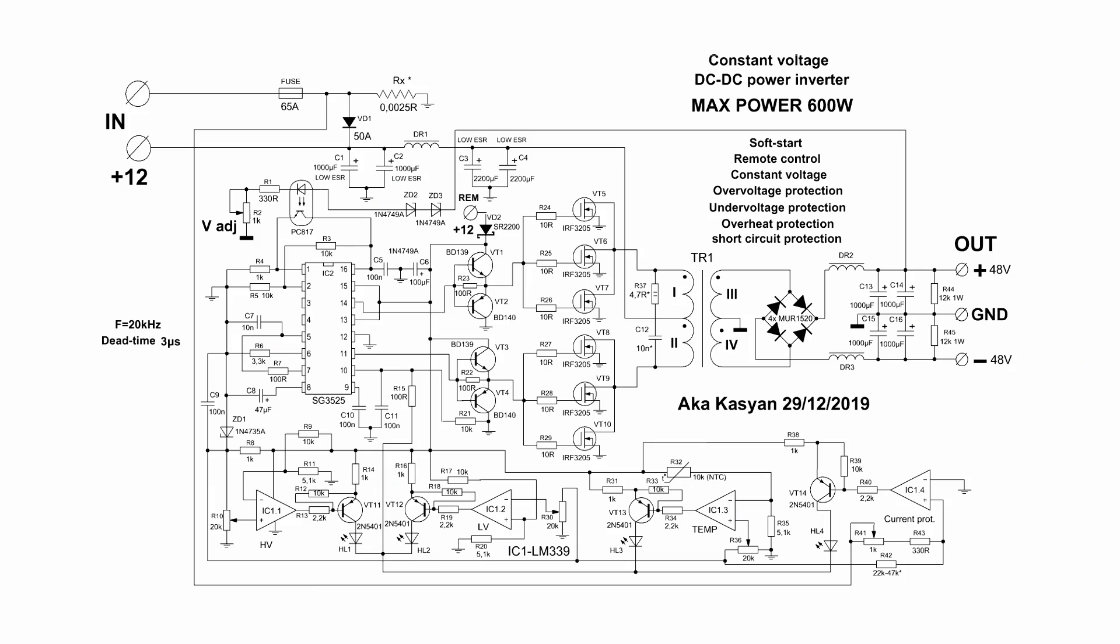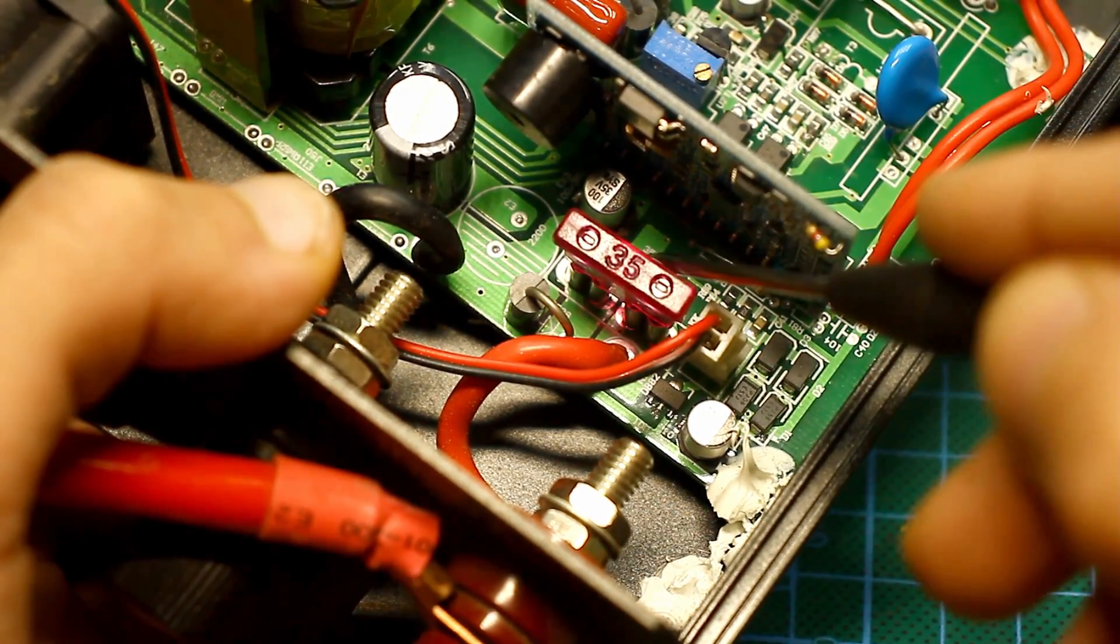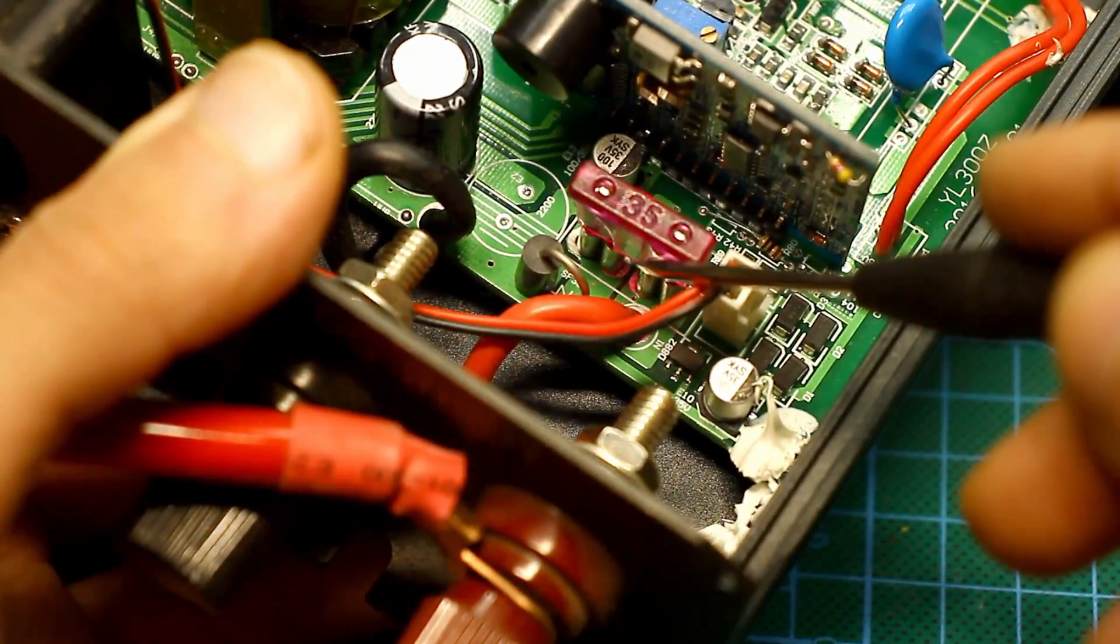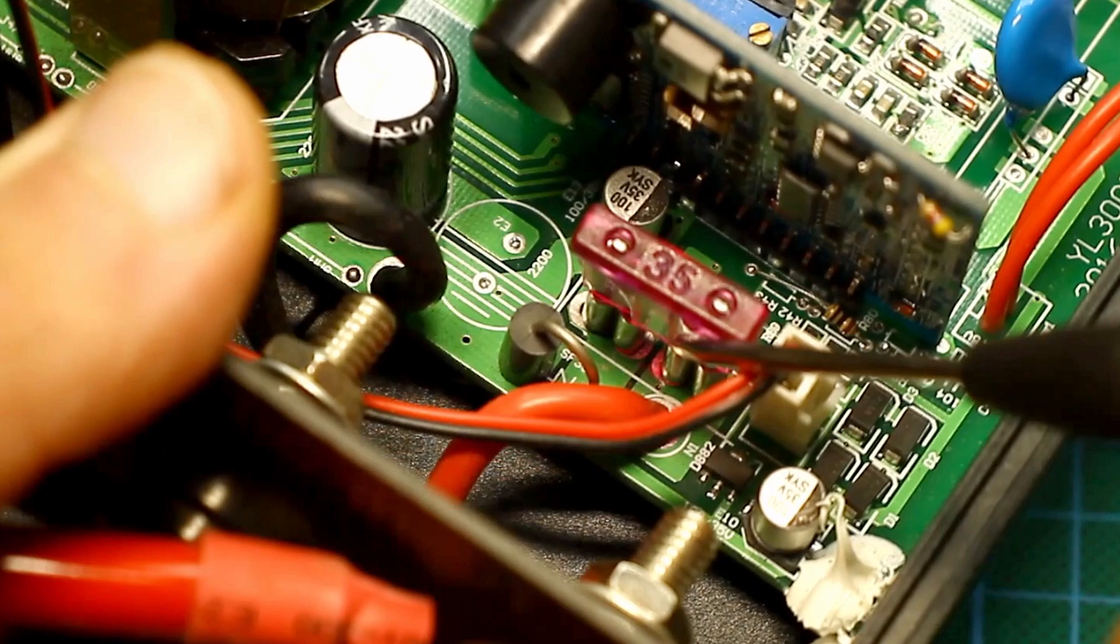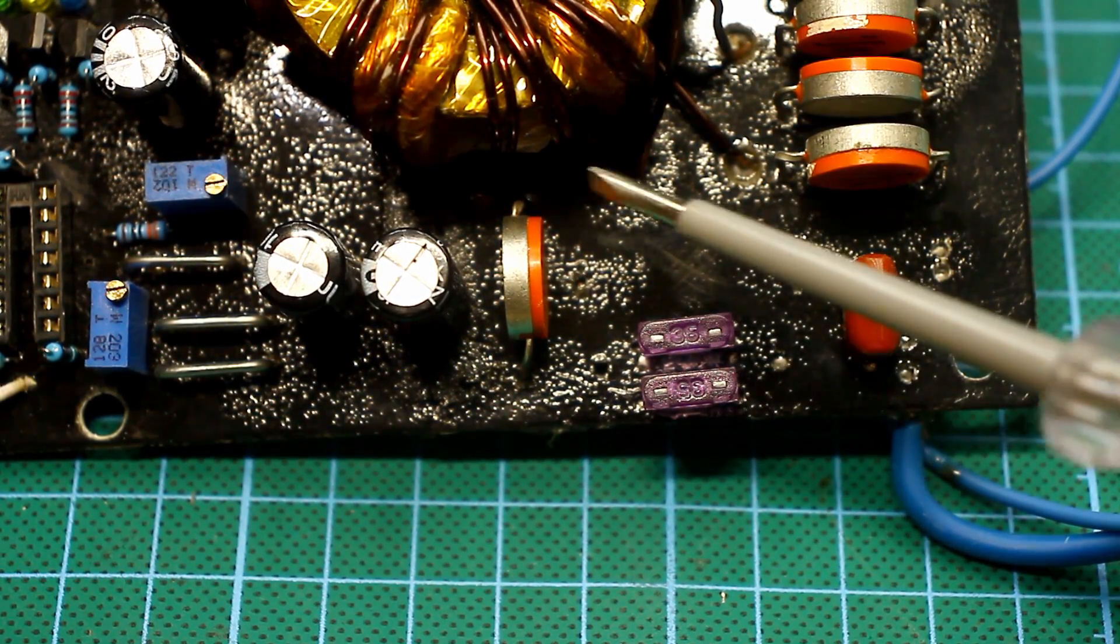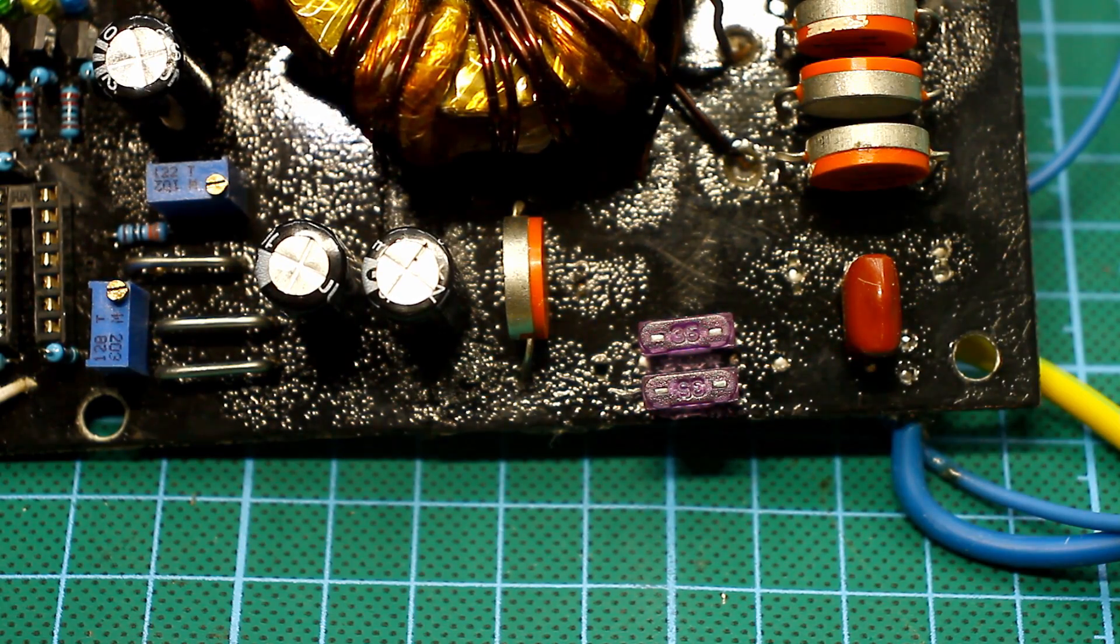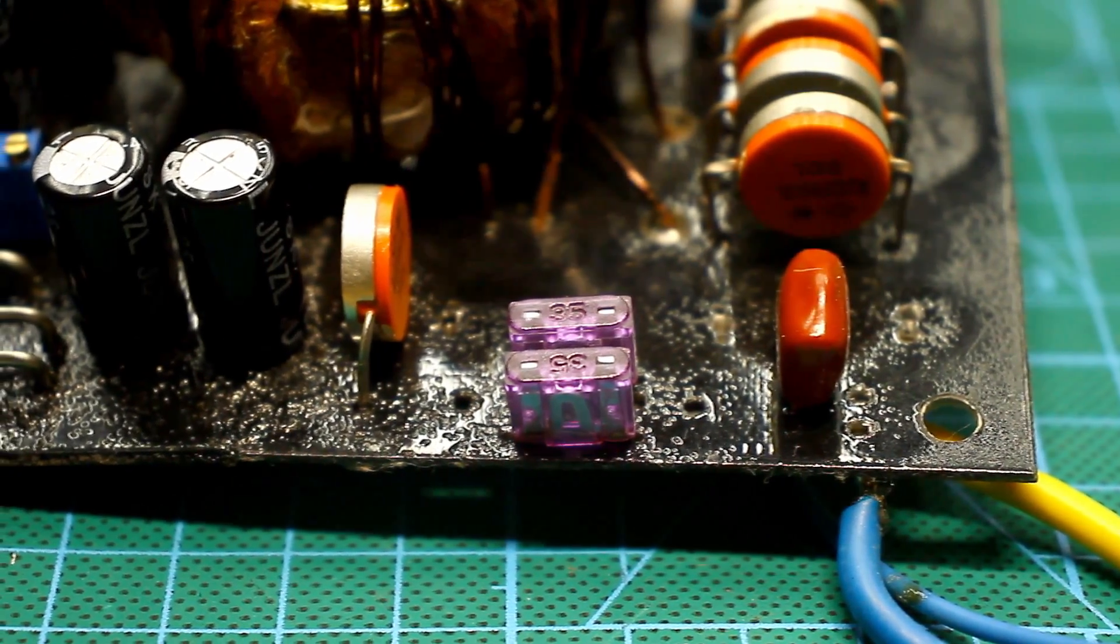The circuit also has protection against reverse polarity of the power supply and it is realized in the simplest way. Precisely, such protection systems against reverse polarity are realized in low-cost amplifiers and converters from 12V to 220V and even in car radios. I don't recommend checking for durability this protection as it doesn't have high speed, unlike the other protections that are in this circuit.